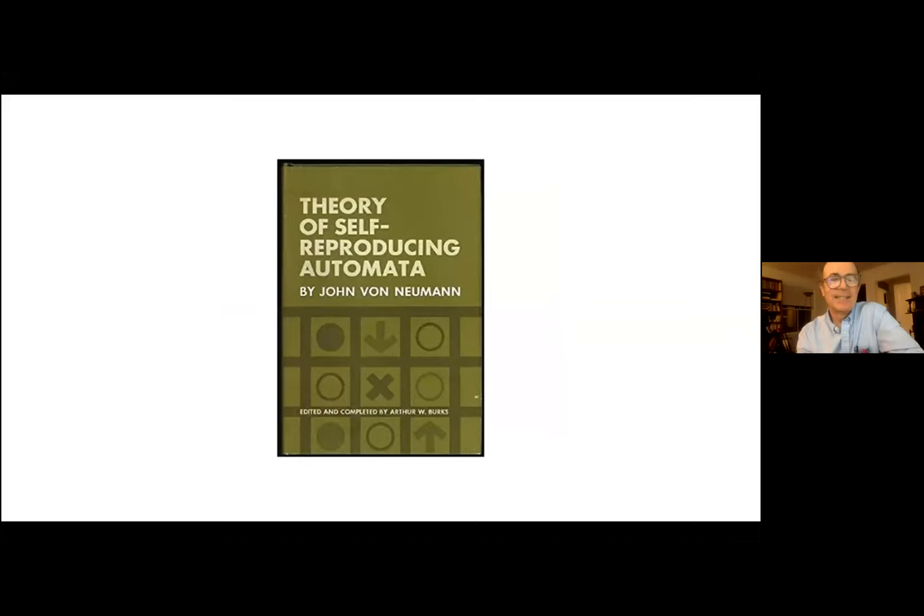Now, von Neumann amazingly in view of his accomplishments, which not only include the architecture of the Von Neumann architecture of computers, but also the theory of games, which is central to modern economics, as well as achievements in, as well as laying down the foundations of quantum information theory, which only today is being appreciated. Despite, did all that in a rather short life. He died before the age of 60, I think in his mid-50s. And at the end of his life, he was working on another